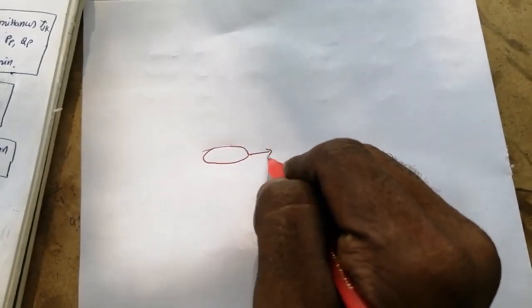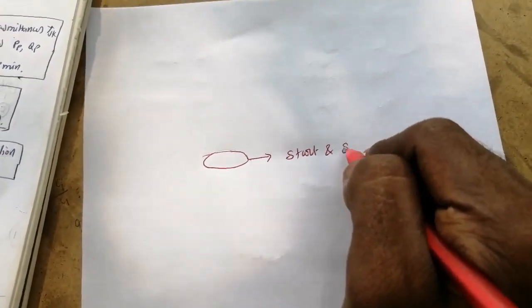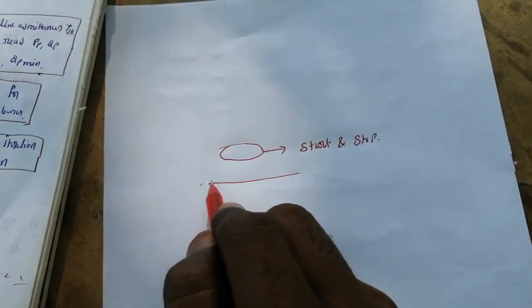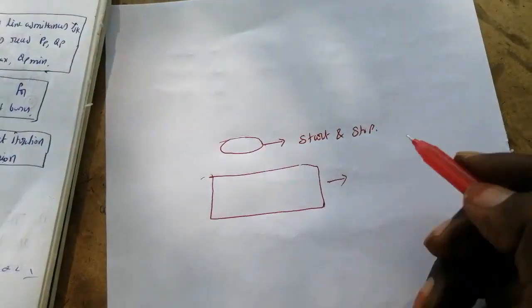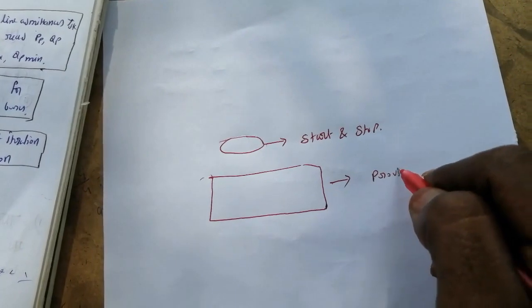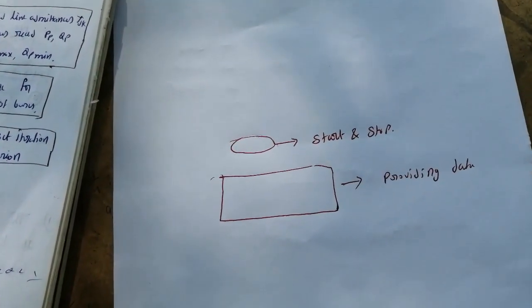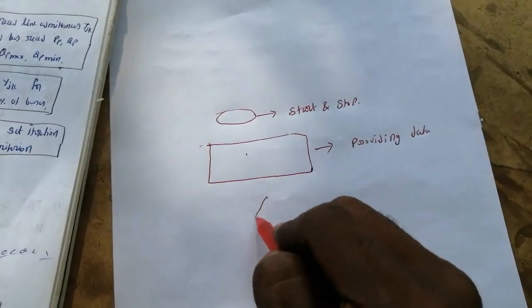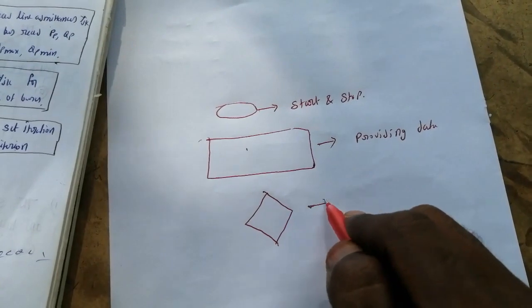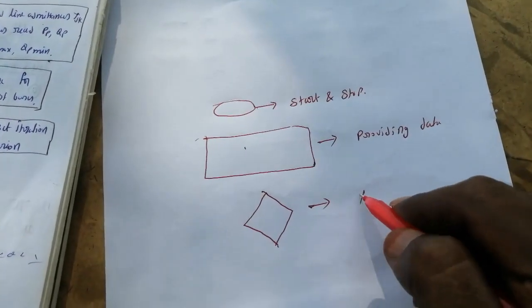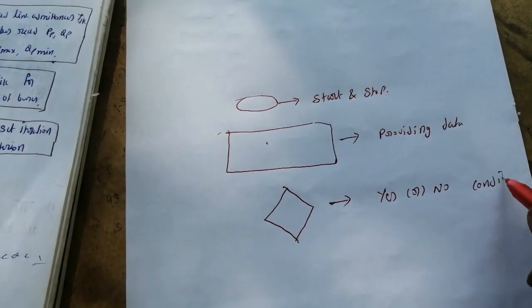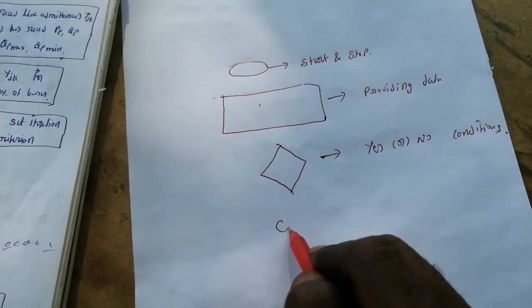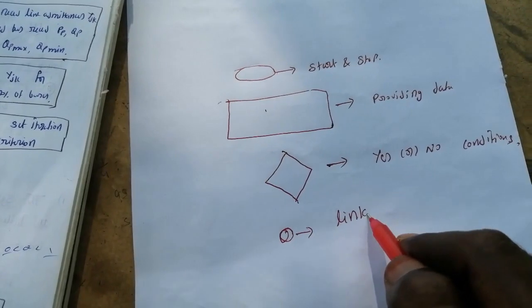Generally we are using four types of boxes. The first symbol is used for Start and Stop. The next one is a rectangular box, used for providing data — specifying what data we have to prepare or find. The next one is a rhombus shape, used for conditions — yes or no decisions. The last one is a small circle, used for linkage or connection between parts of the flowchart.